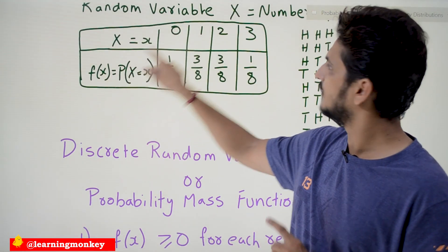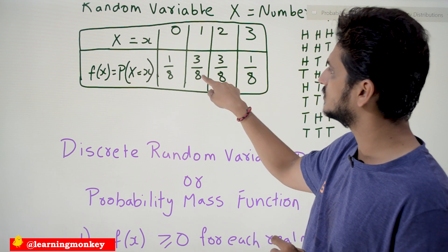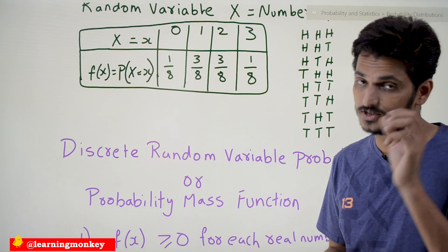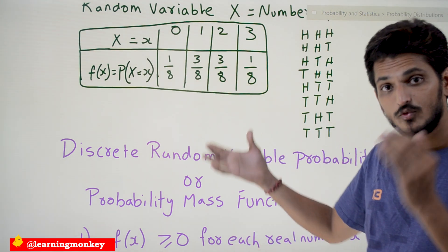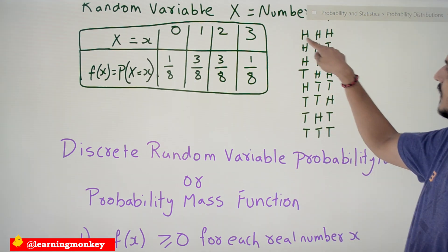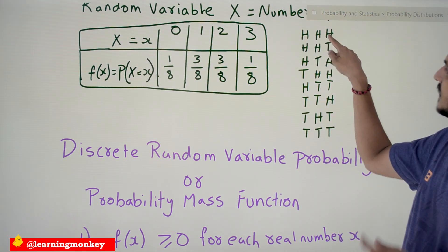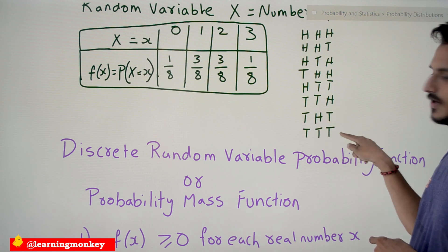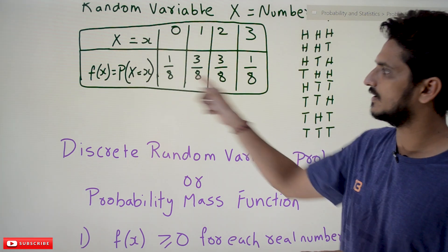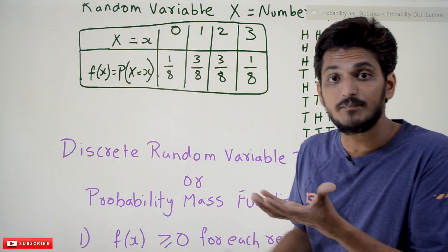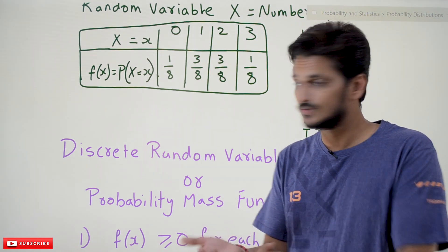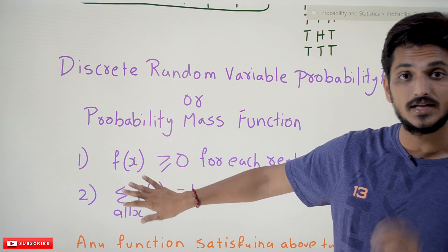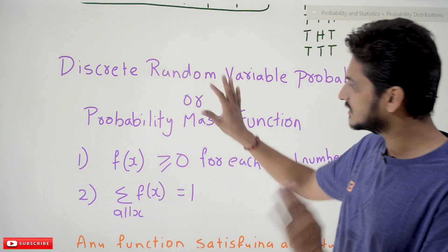If you substitute the x values: f(0) = 1/8, f(1) = 3/8, f(2) = 3/8, f(3) = 1/8. This represents our entire sample space — because any sample event will result in either 3 heads, 2 heads, 1 head, or 0 heads; all possibilities are covered. Since the probability of the sample space equals 1, the summation of all these values must equal 1.